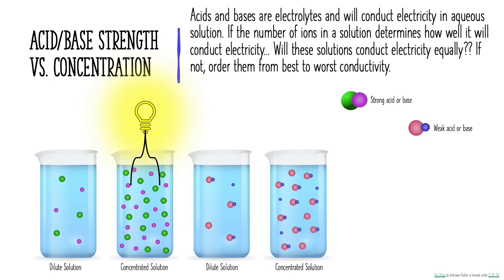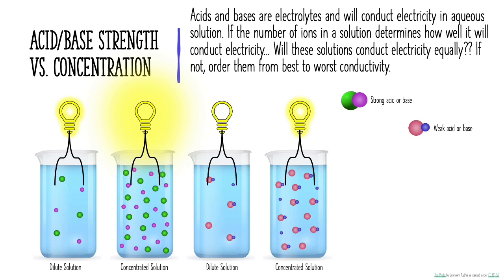The second tier includes the dilute solution of a strong acid and the concentrated solution of a weak acid or base. Even though the concentrated weak acid has more solute, not all of it has ionized — and it's the ions that allow electricity to be conducted. If you count the ions, these two beakers actually have an equal number. The worst conductor is the dilute solution of a weak acid or base, which has very few ions in solution.